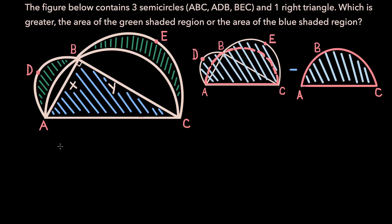As outlined in the figure on the right, in order to find the area of the green shaded region, let's start by finding the area of the entire figure. Let's begin by finding the area of this right triangle. It has one leg of length x and another of length y, so its area will be x times y over 2. Now for the area of semicircle ADB, it has a diameter of x, so its radius will be x over 2, which means its area will be π times (x/2)² over 2, because it's a semicircle.